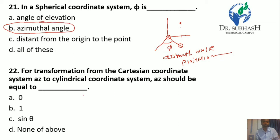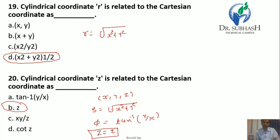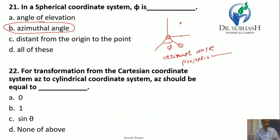Question 22: For transformation from a Cartesian coordinate system az to the cylindrical coordinate system, az should be equal to — as I mentioned, z equals z. So the answer is none of the above.